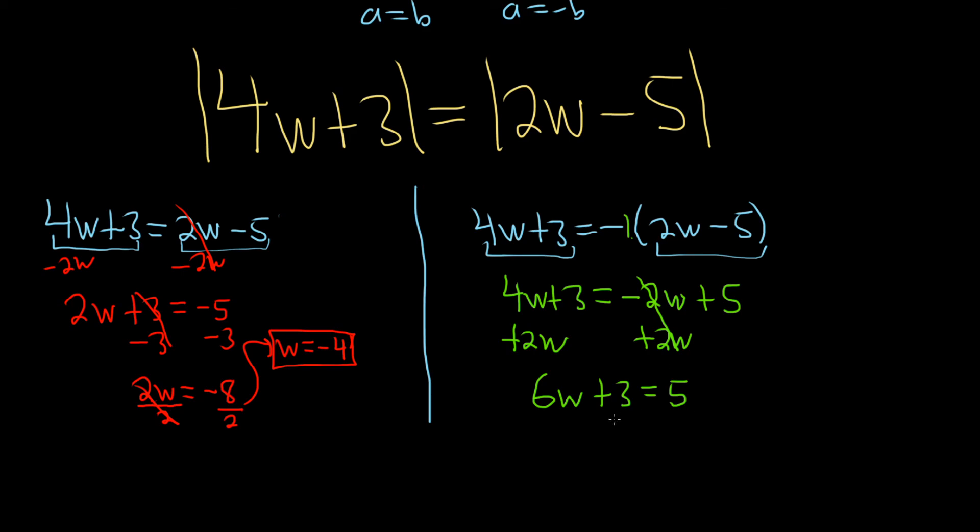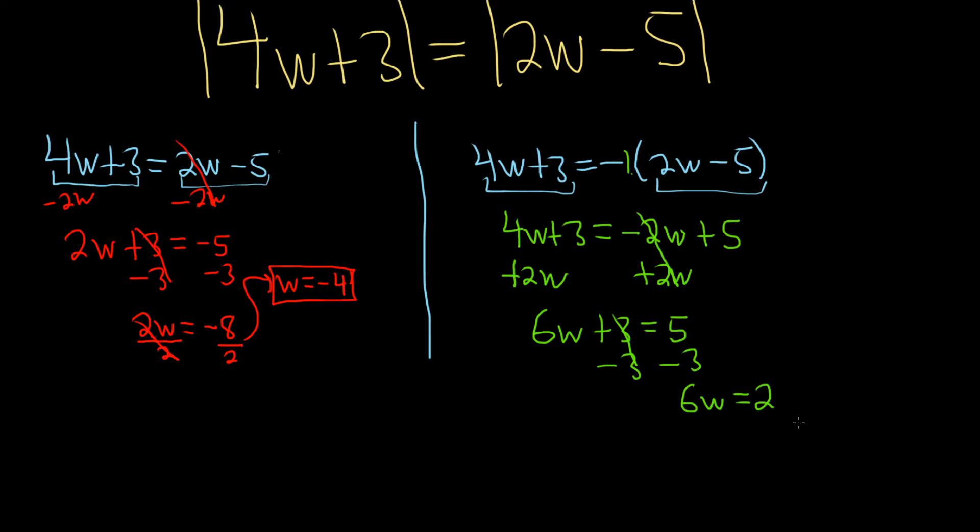Then we'll subtract 3 from both sides. So minus 3, minus 3. So 6w is equal to 2. And as before, it's being multiplied by a number. So to get rid of it, we'll just divide. So dividing by 6, we end up with w equals 2 over 6, which is the same thing as 1 over 3. So a little bit longer than some of the other absolute value equations. I hope this video has been helpful.